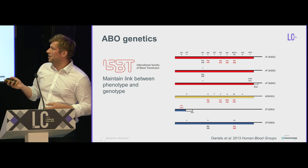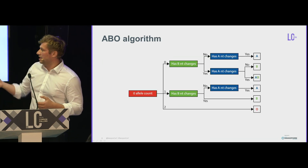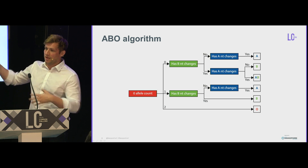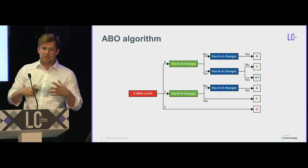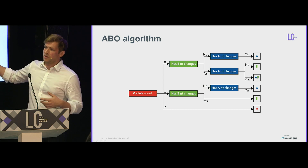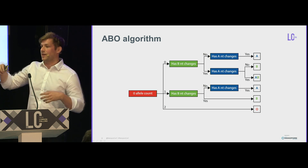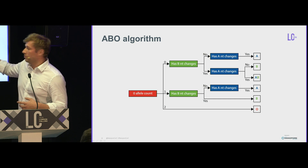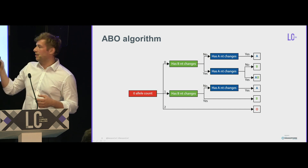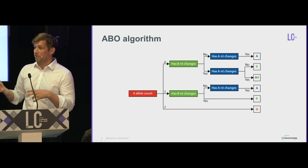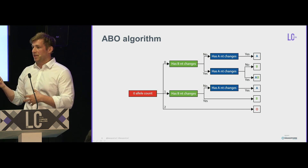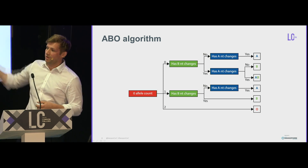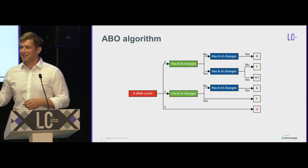I've put this into an algorithm. Basically, I look for the O variants first in a sample. If you have two O variants that are phased and come in trans, then you're O. If you have one O variant, I check for B nucleotide changes — if present, I predict blood group B, because most commonly O variants come with blood group A, and the O will knock out the A leaving you B overall. If there are no B changes, then you're A.